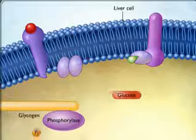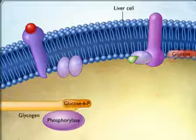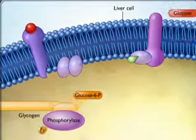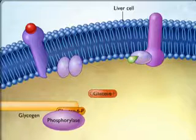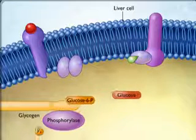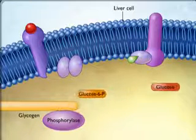Through this multi-step mechanism, epinephrine causes the liver to secrete glucose into the blood during the fight-or-flight reaction.